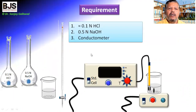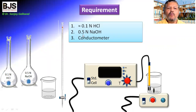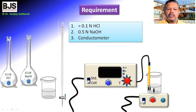This experiment requires approximately 0.1 normal HCl solution, 0.5 normal NaOH solution, and a conductometer. This is the conductometer. Along with it, we need a conductivity cell, a beaker, a magnetic needle, a magnetic stirrer, a burette, beakers, and some glasswares.